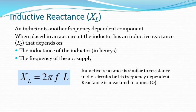Like a capacitor, an inductor is a component that can have different properties depending on the frequency of the AC supply. When placed in an AC circuit, the inductor has what we call inductive reactance — that is the opposition to the flow of the alternating current. It's similar to resistance in that resistance is the opposition to the flow of current, but it differs because it depends upon the frequency and the inductance of the inductor. Inductive reactance is measured in ohms.